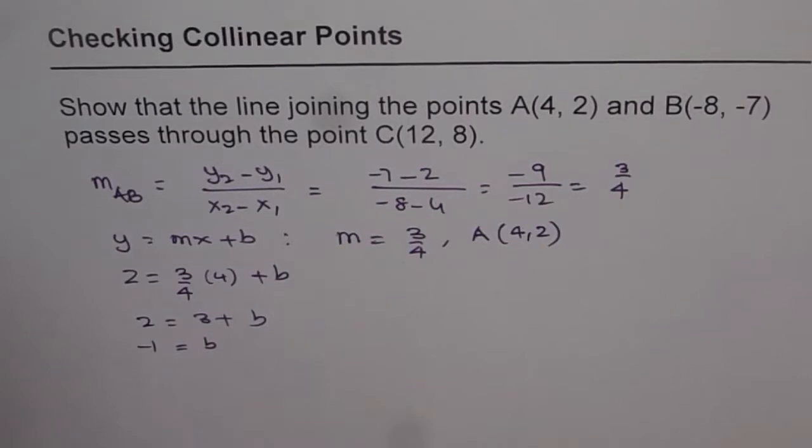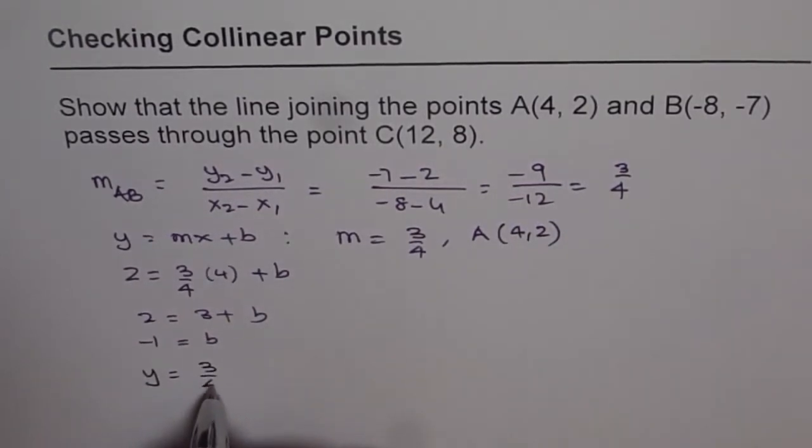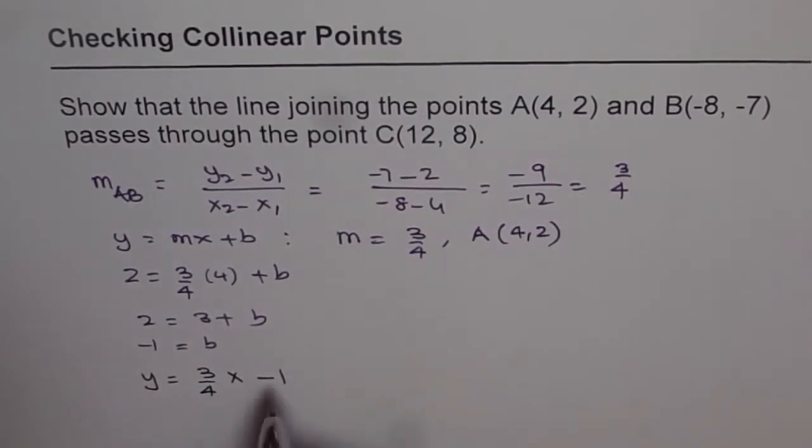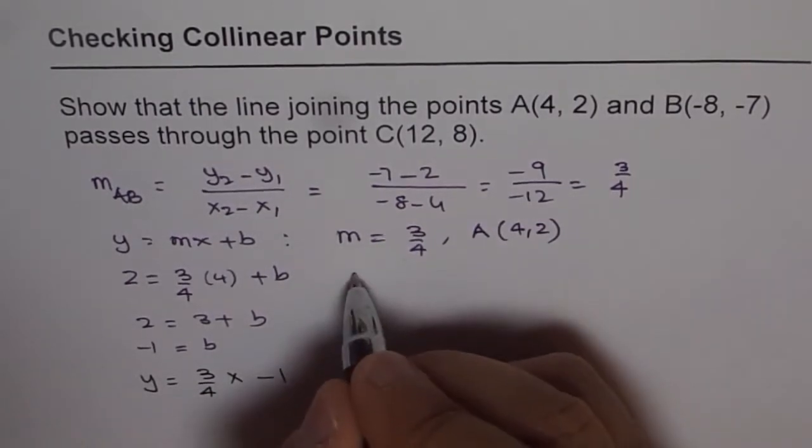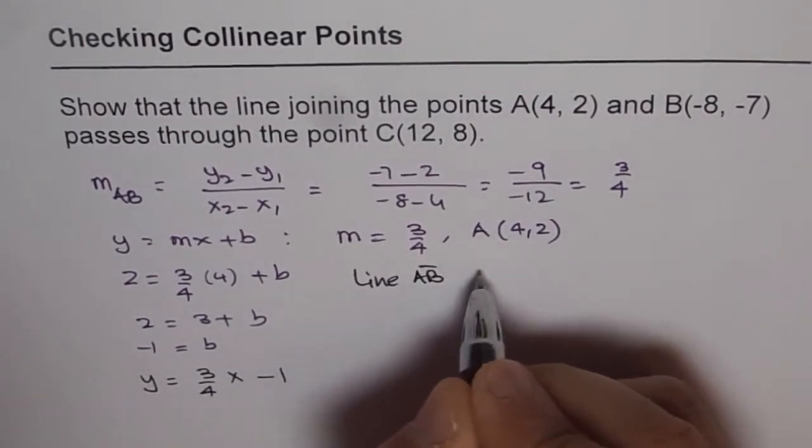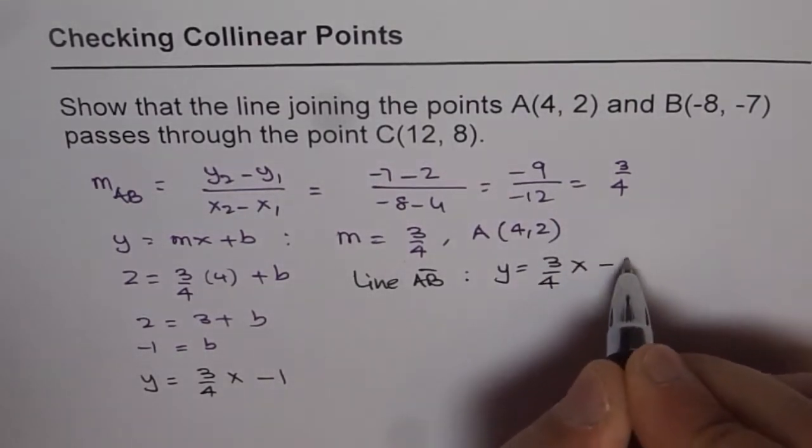So once we know b, then we know the equation of the line. And from here, we can write down the equation of the line as y equals 3/4 x minus 1. So that is the equation of the line AB.